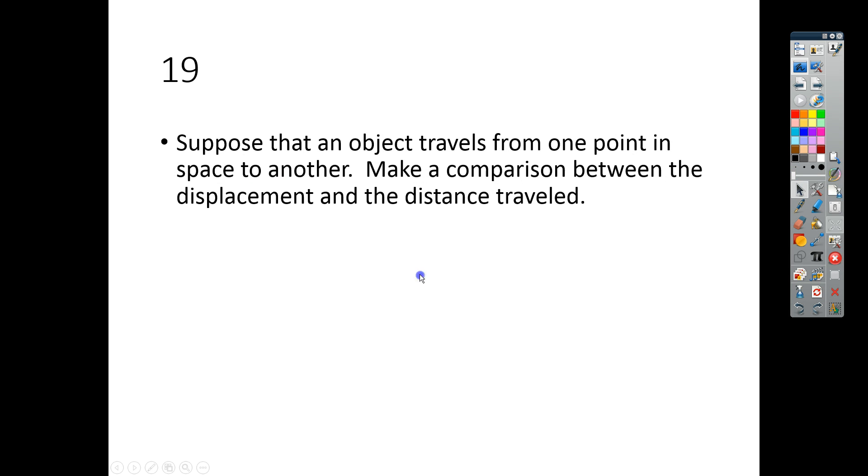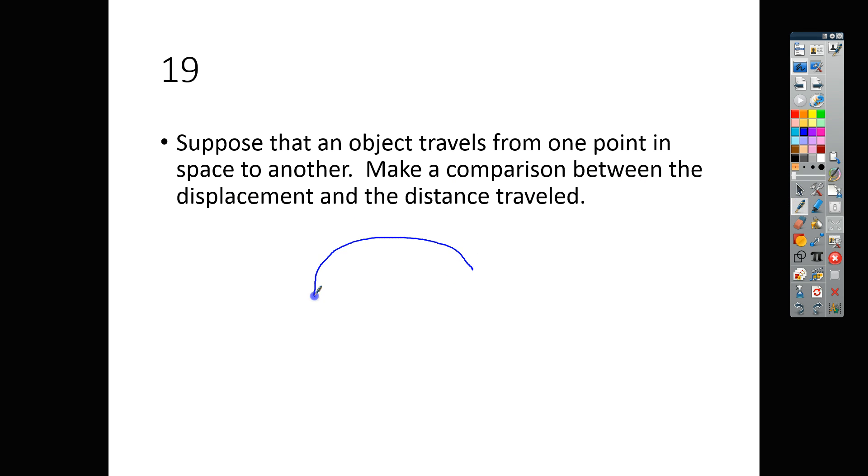For number 19, an object travels from one point in space to the other, make a comparison between the displacement and the distance traveled. The answer for this one is, if you think about it, if we have a circle and I go from here to here, our distance would be along the curve. So this is our distance. And then the line that goes from point A to point B, this is our displacement.